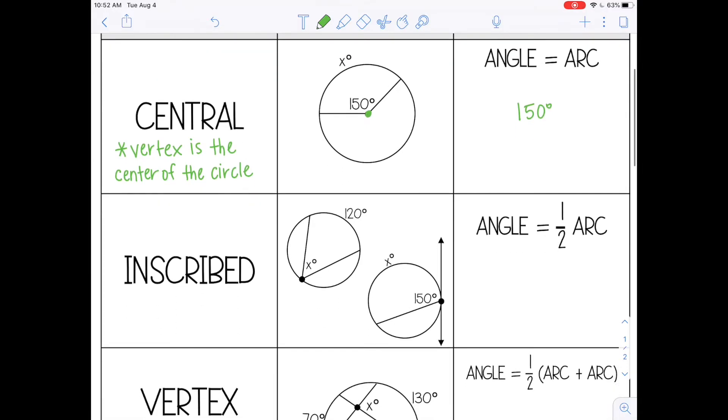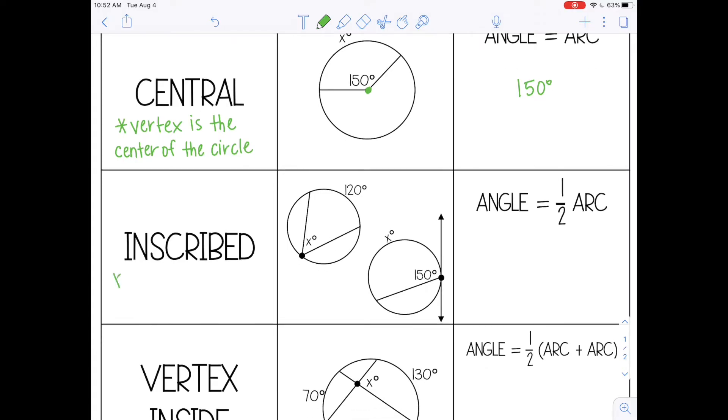For an inscribed angle, the vertex is on the circle. It's on the circumference of the circle.